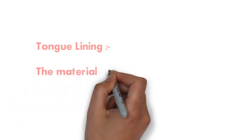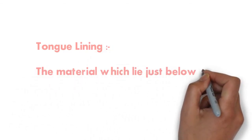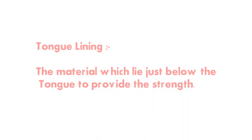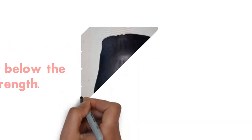Tongue lining: the material which lies just below the tongue is called tongue lining. And it also provides strength to the material.